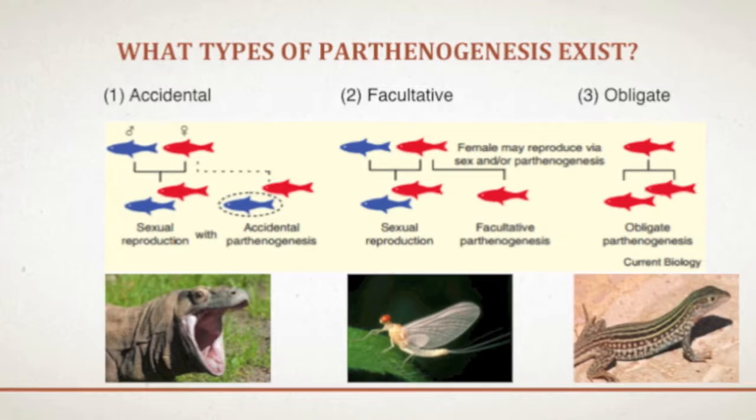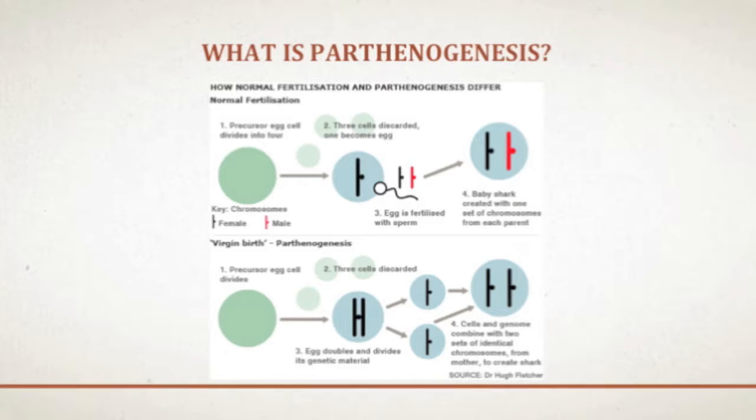There are three types of parthenogenesis that are currently being studied today: accidental, facultative, and obligate.